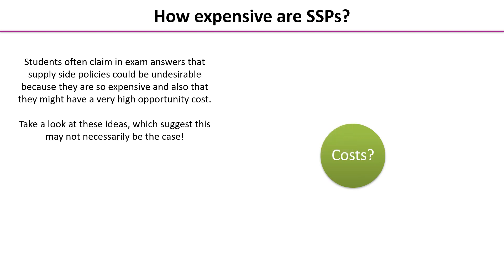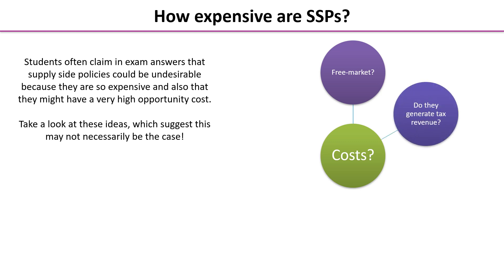In each of these cases, we're going to be thinking about the costs. First, supply side policies could be to create a more free market. What you know about free market policies is that they actually reduce the amount of government activity, so in the long run they may cost less than they currently do. Secondly, some supply side policies actually generate tax revenue — in the medium to long term, that extra income may actually outweigh the cost of introducing the policy.